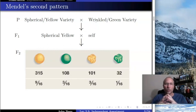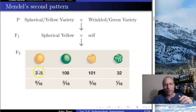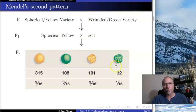These are the numbers he himself reported: 315 were round yellow, 108 were round green, 101 were wrinkled yellow, and 32 were wrinkled green. Not 3-to-1 obviously — but it makes sense that it's not simply 3-to-1, because we're talking about two traits at a time. But look more carefully: 315 to 108 is close to 3-to-1, 315 to 101 is also close to 3-to-1, 108 to 32 is close to 3-to-1, and 101 to 32 is also close to 3-to-1.